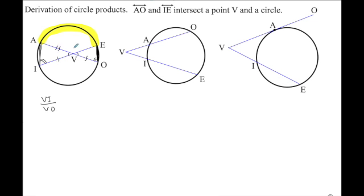And then these two segments here correspond. So we could say that would be VA over VE. We could use that to solve for a missing segment in here.